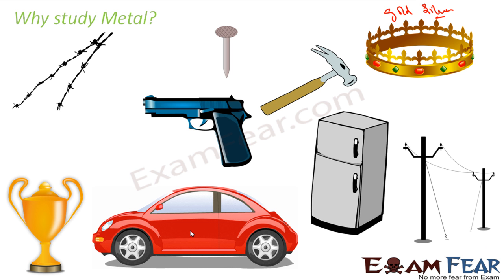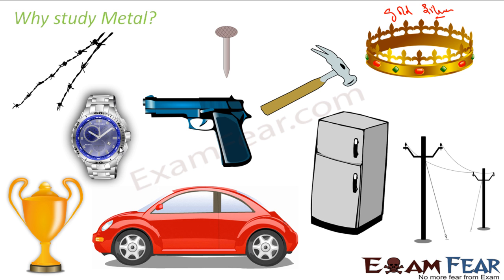Any automobile — a car, a bike, a cycle — has metal involved because they need strength. The body of most cars is made of metal. The watch we use also has metal elements. Even a plastic watch has metallic components inside. So metals are used in a lot of places in our day-to-day life — jewelry, cars, bikes, electronic appliances, electricity, furniture — and that's a good reason why we should study them.